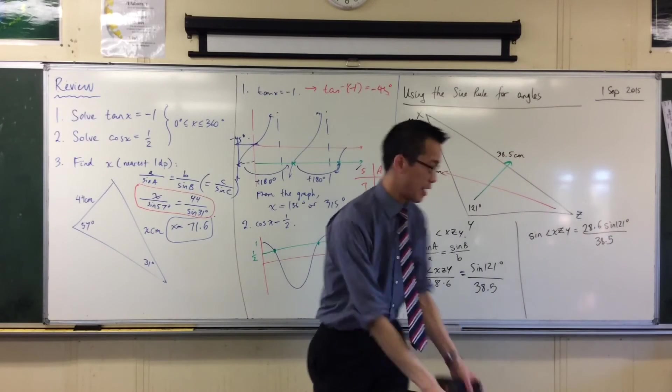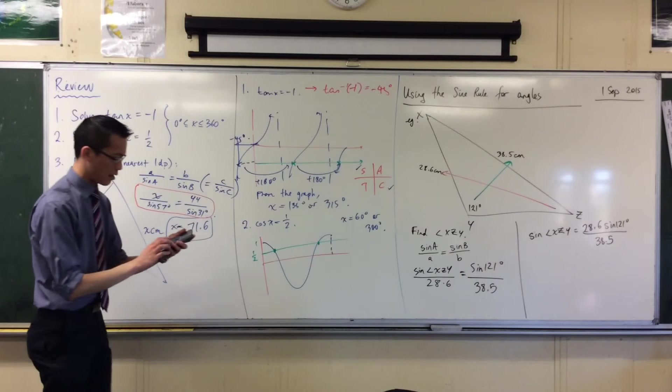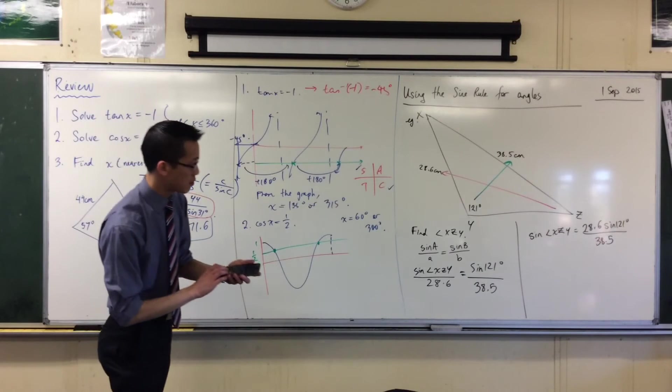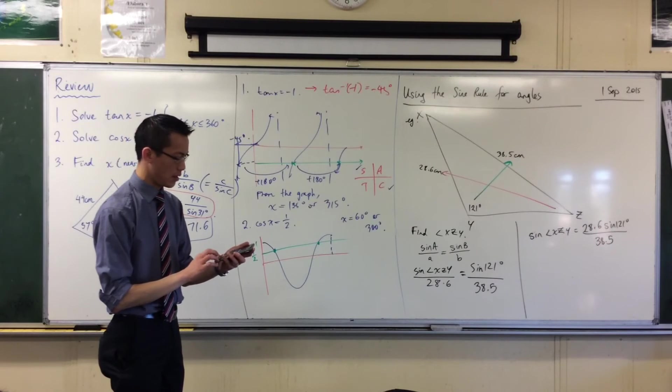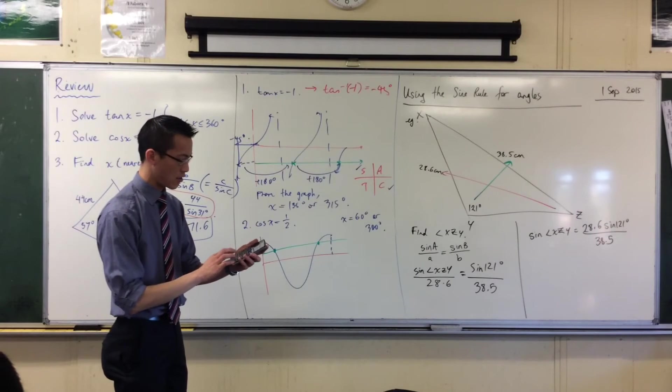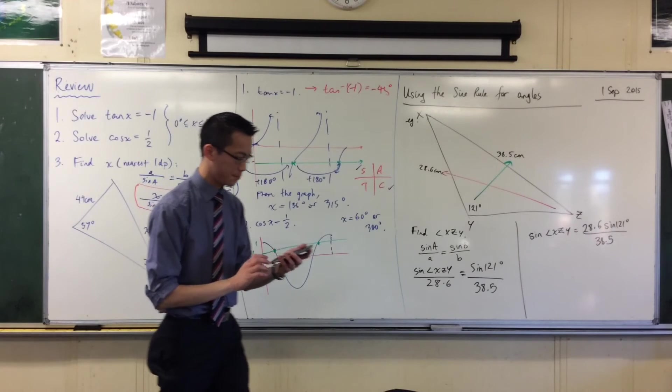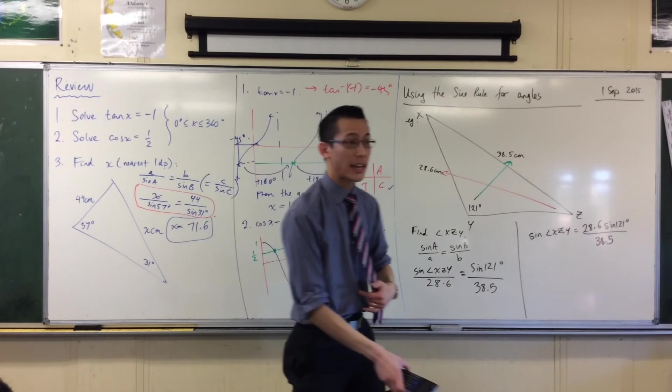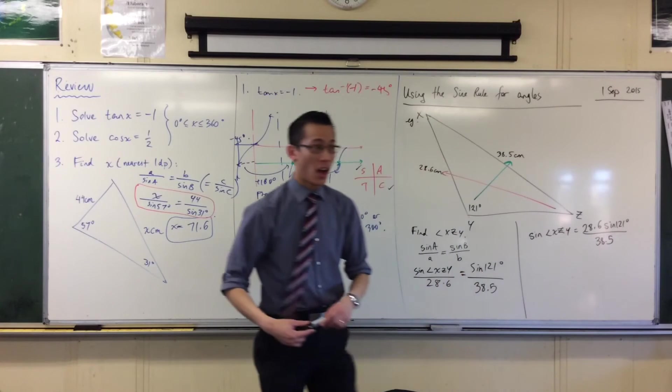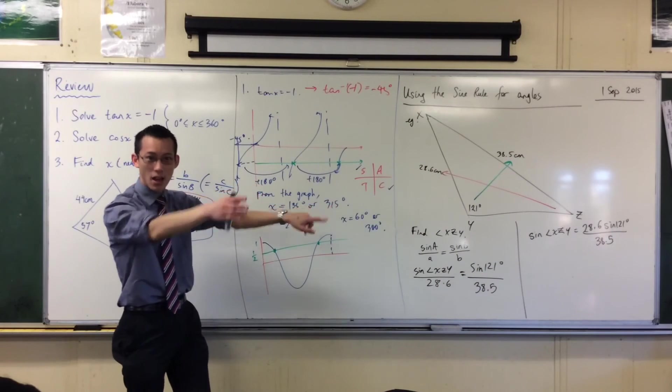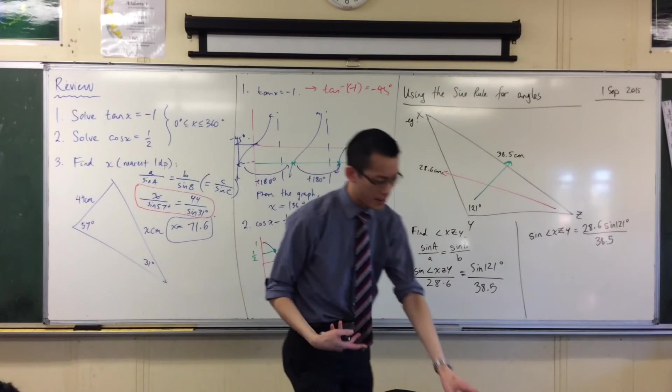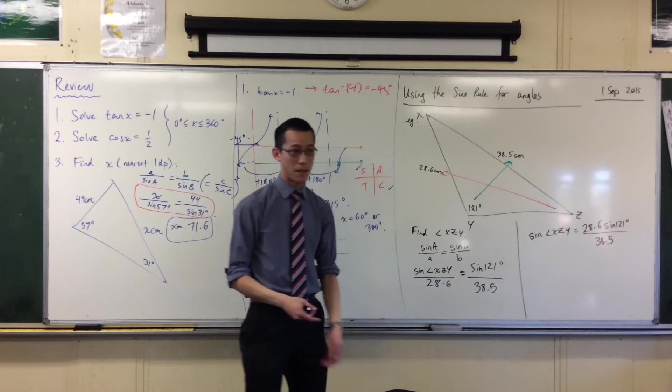Now, once you pop that into your calculator, I'm going to do the same as well. 28.6, so 121. Don't forget to close any brackets that your calculator inserts for you. Okay. What are you getting? Okay. Now, if I just hit equals on this, before I get to that, I'm getting a decimal, aren't I? I'm getting this 0.63 blah, blah, blah.